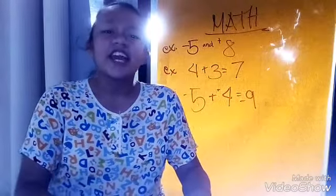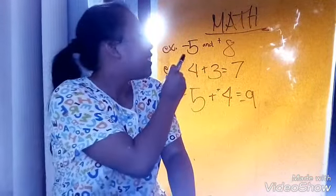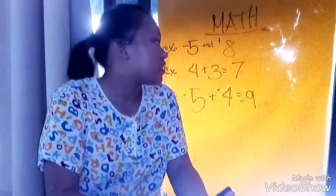First, integer. Integer is a set of positive and negative whole numbers. Example, negative 5 plus positive 8.